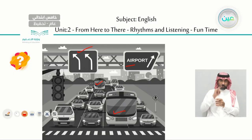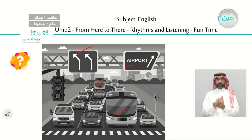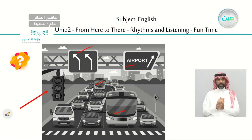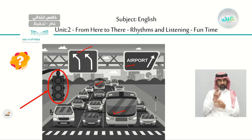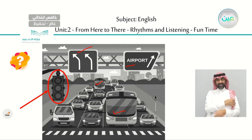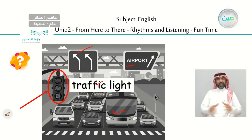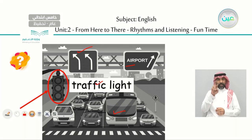What else can you see? What about this one, my student? Look here. What is this? Have you ever seen this? Yes — we call it a traffic light. We call it a traffic light. The traffic light is always on the road.